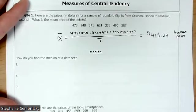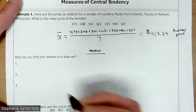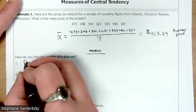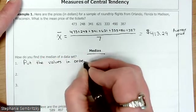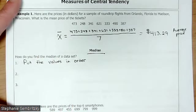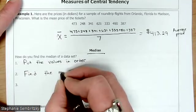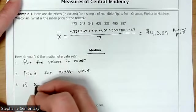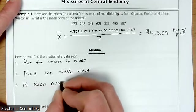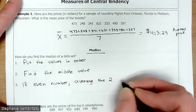Now what about median? How do you find the median of a data set? Okay, so the first step is put the values in order. And then what? Once they're in order, find the middle value. But what if it's an even number? Okay, so if even number, average the two middle values.